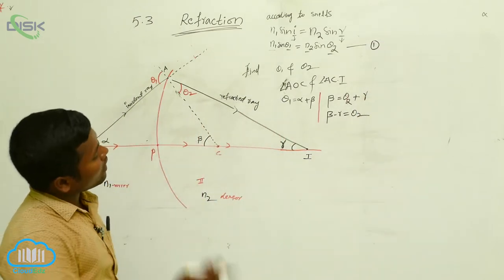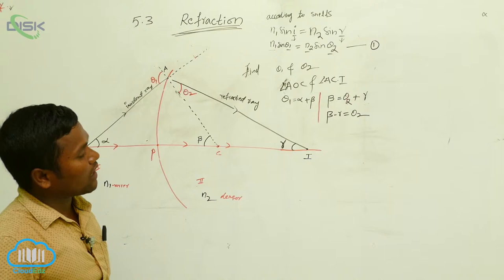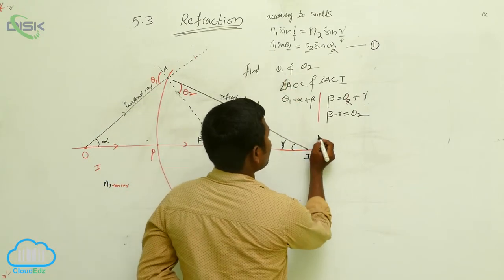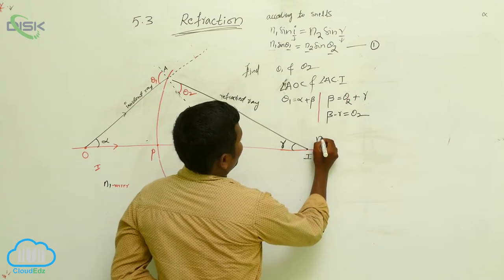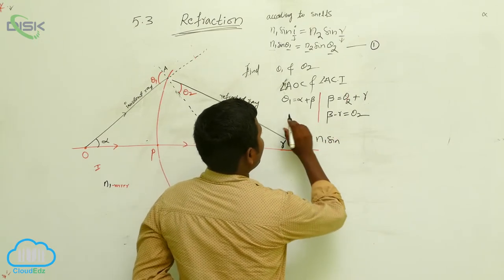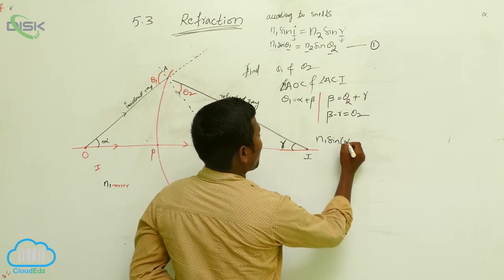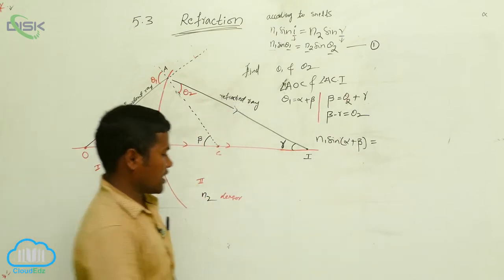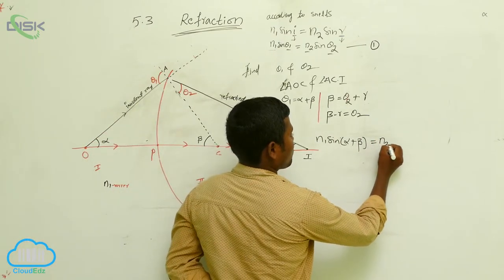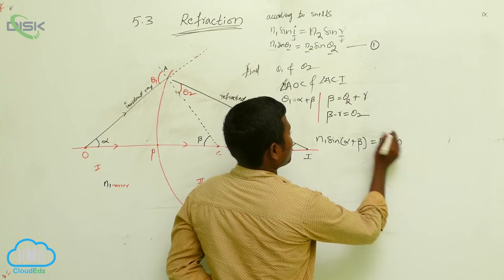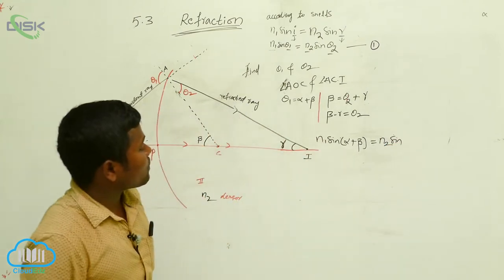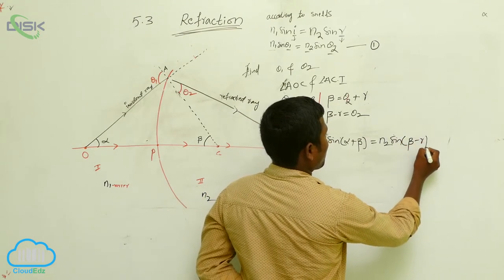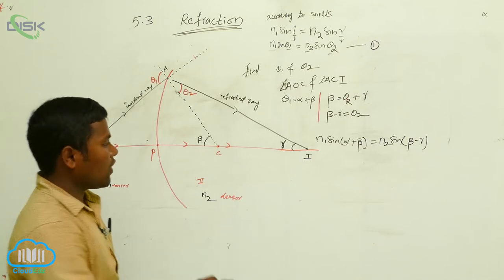Now I am substituting the θ1 and θ2 values into equation number 1. So: n1 sin(α + β) = n2 sin(β − γ). This is the relation.